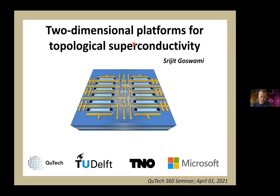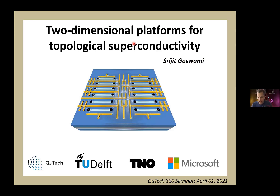In doing that, he covered gallium arsenide, silicon, van der Waals materials, graphene, complex oxides, and perhaps many more material systems. With that as a basis, he started at Qtack as a group leader doing exciting research. One of the main goals is to study topological phase transitions, and the title of this presentation is to study two-dimensional platforms for topological superconductivity.